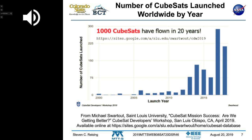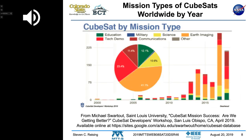Planet had another launch the next year with about 70 more. Looking at the mission type pie chart, bright red is technology demonstration, deeper red is communications, green is educational uses, yellow is science, and orange is earth imaging.